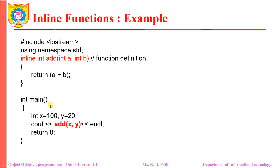Now let me observe the main function. Here x is 100 and y is 20. In the cout statement I have called the add function, which is my inline function, to perform the addition of two numbers. x and y are the two arguments with values 100 and 20 respectively. The addition will be performed and the return value, which is 120, will be returned by the inline function. The function body consists of a single line and the function header consists of the keyword inline — that is the difference between a regular function and an inline function.